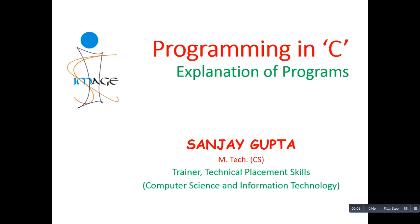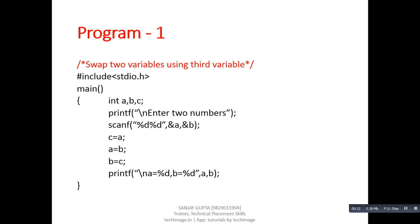Hello friends, I am Sanjay Gupta. In this tutorial I will be explaining some programs written in C. Program one: swap two variables using a third variable. Swap means to interchange values of two variables.